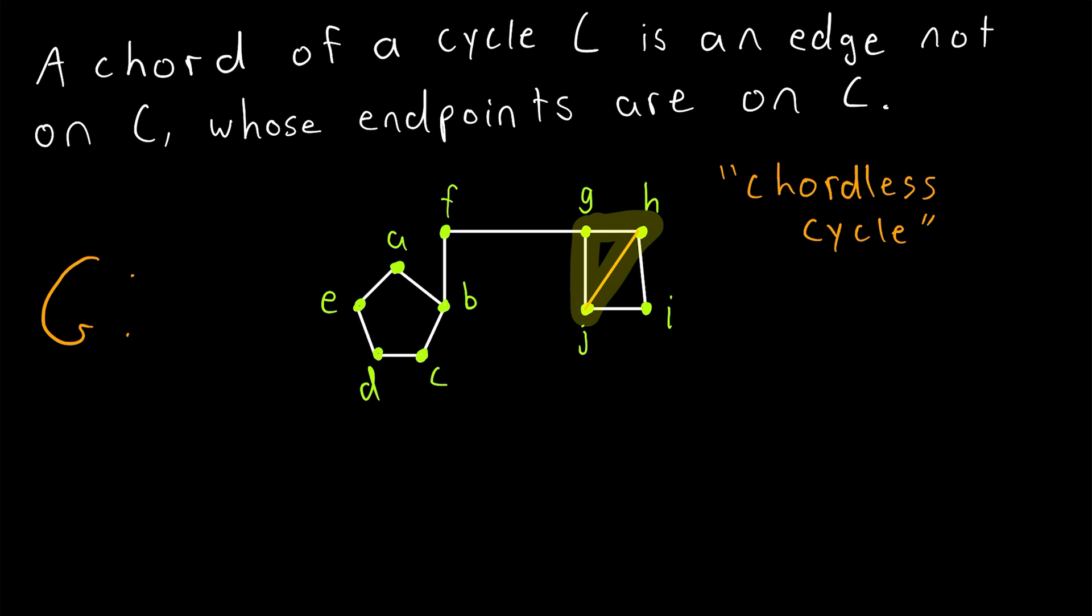Since a cycle on three vertices is a complete graph on three vertices, these cycles can't have any chords. So it's kind of meaningless to call them chordless cycles, when no chord could possibly be added anyways.